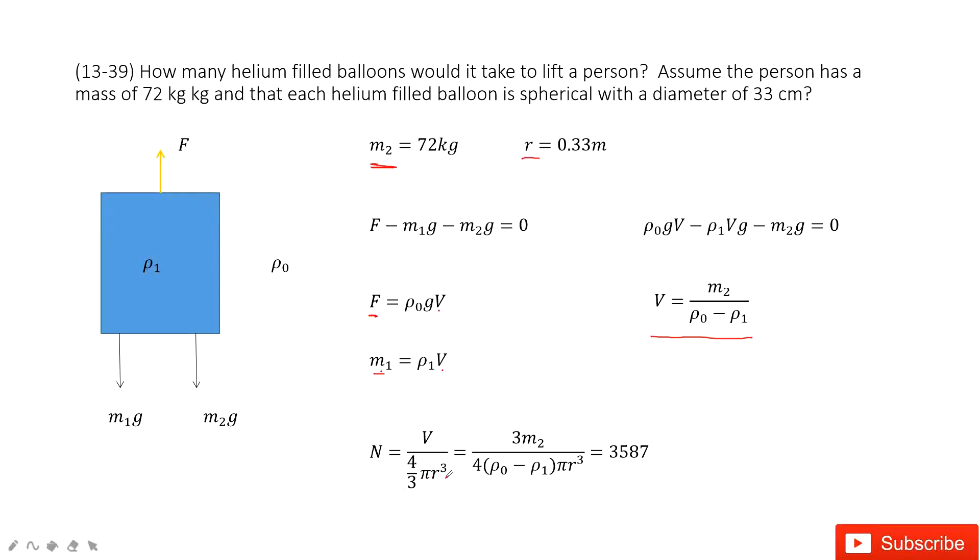So how many of these balloons do we need? N equals total volume divided by the volume from each balloon. And then we input this V inside. We get the function looking like this one, and then input the known quantities to get the final answer.